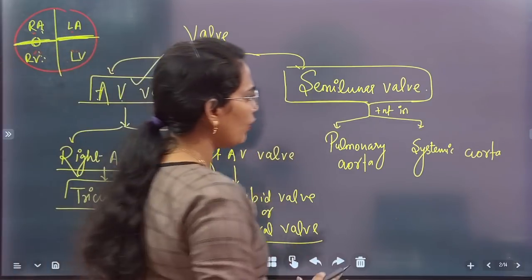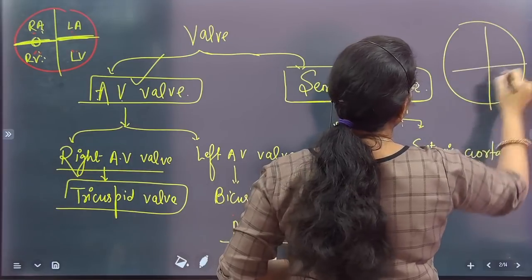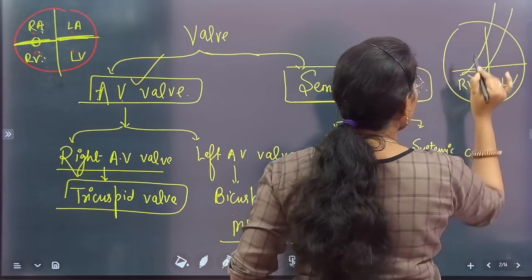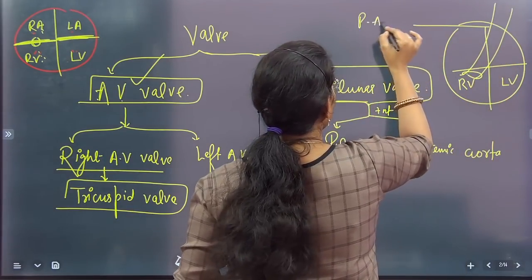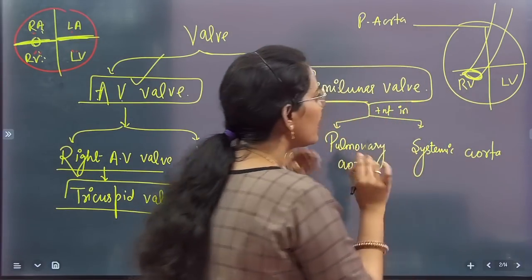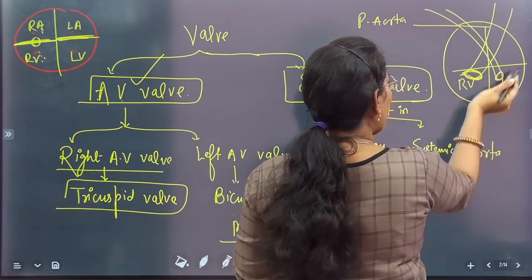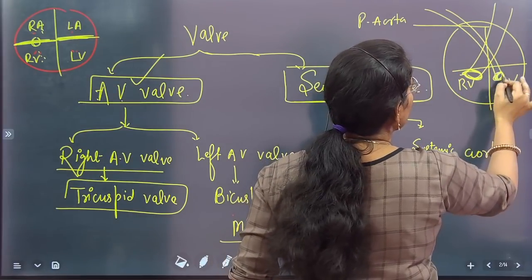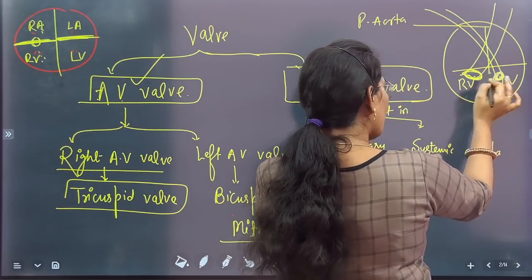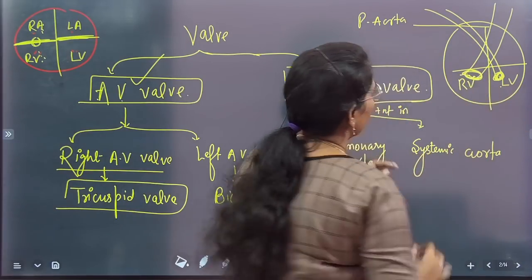There is also the semilunar valve. The right ventricle sends blood to the lungs through the pulmonary aorta, and at the pulmonary aorta there is the pulmonary semilunar valve. The left ventricle sends blood to the body through the systemic aorta, and there is the systemic semilunar valve. So both the pulmonary aorta and the systemic aorta have semilunar valves.